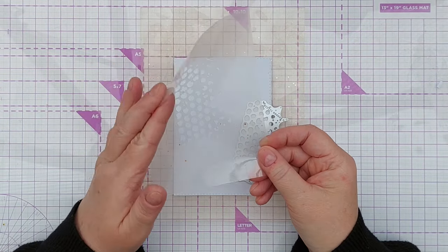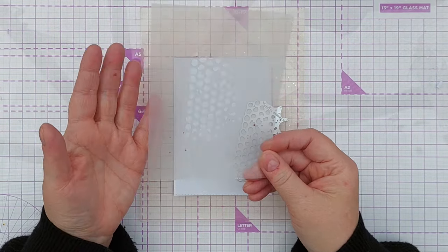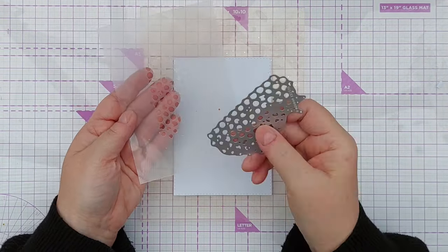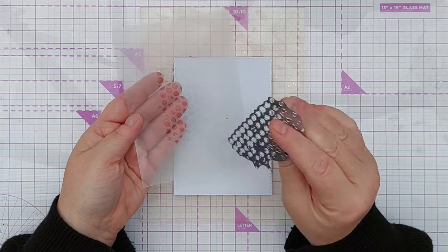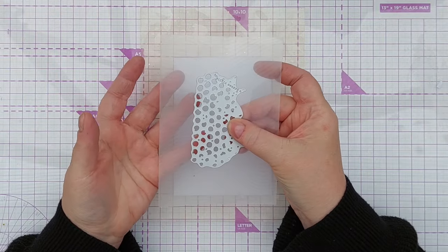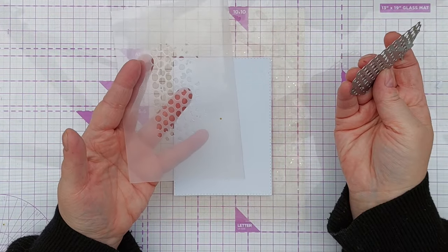This is a bit thinner than regular stencil material but I find it easier to cut using dies. So I've got this Sizzix die and I've simply run it through my die cutting machine with the mylar and I've got a DIY stencil.